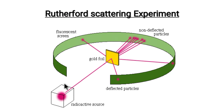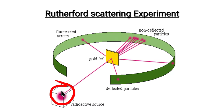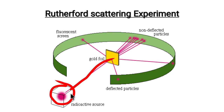The Rutherford Scattering Effect schematic diagram is required. There is a radioactive source. We have a radioactive source and a gold foil.